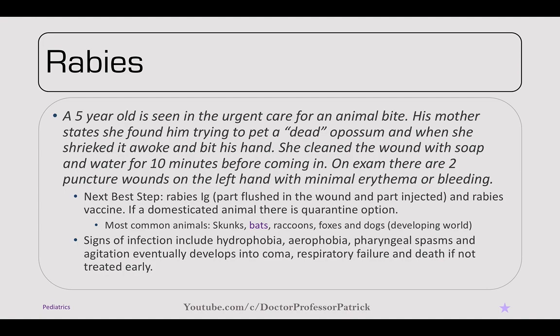A five-year-old is seen in urgent care for an animal bite — his mother found him petting what appeared to be a dead possum, which awoke and bit his hand. She cleaned the wound with soap and water for 10 minutes before coming in, which is the first step. On exam, there are two puncture wounds on the left hand. The next best steps are to start rabies immunoglobulin — part flushed in the wound and part injected — and then the rabies vaccine series. For domesticated animals, you can quarantine and test before starting the series. The most common animals are skunks, bats, raccoons, foxes, and dogs. In the US, skunks are the most common. For bats, because their bites are less noticeable, anyone found with a bat in the room should be treated for rabies as a precaution.